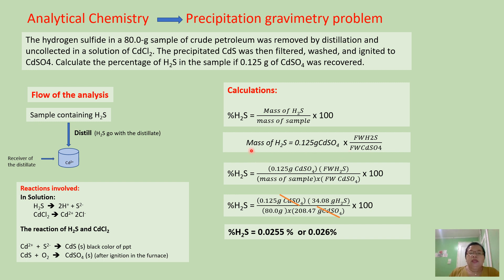We substitute this into our original equation to generate a new equation. In the numerator we have the mass of cadmium sulfate and the formula mass of hydrogen sulfide. In the denominator we have the mass of sample and the formula mass of cadmium sulfate. Note that formula mass and formula weight are the same. Now we substitute all the values.